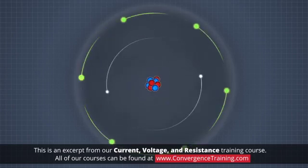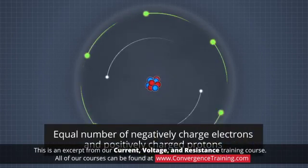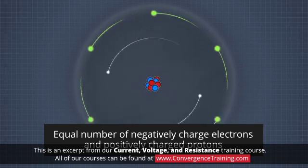Most materials in their natural state, like the atoms that make them up, have a balanced or neutral charge. They have an equal number of negatively charged electrons and positively charged protons.